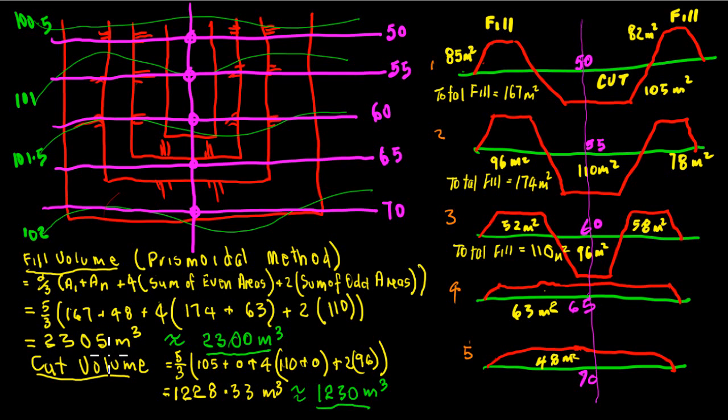Cut volume is just pretty much the same again. It's the distance 5 over 3 times 105, there is the cut in the first one, the zero cut in the last one, so that becomes zero plus 4 times the sum of the even areas. So again we've got 110 there and 0 in the 4 position.